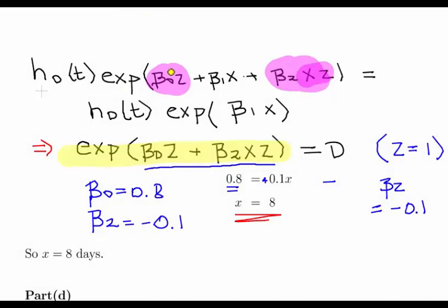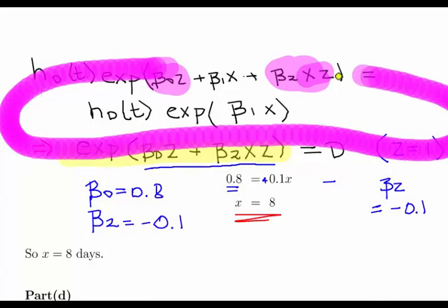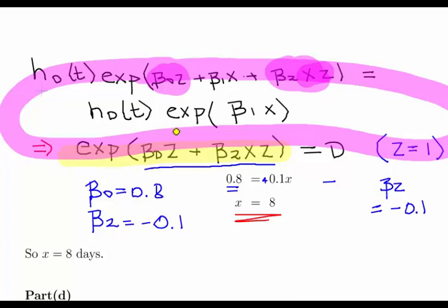Now looking at part D: H0(T) times the exponent of beta one times T describes a cow on the previous treatment. Just a reminder that beta one equals 0.4. If X is the number of days that the cow had to wait before starting treatment, we multiply by that number. For the question we're about to work through, X equals 3, so the exponent would be 0.4 times 3 equals 1.2.